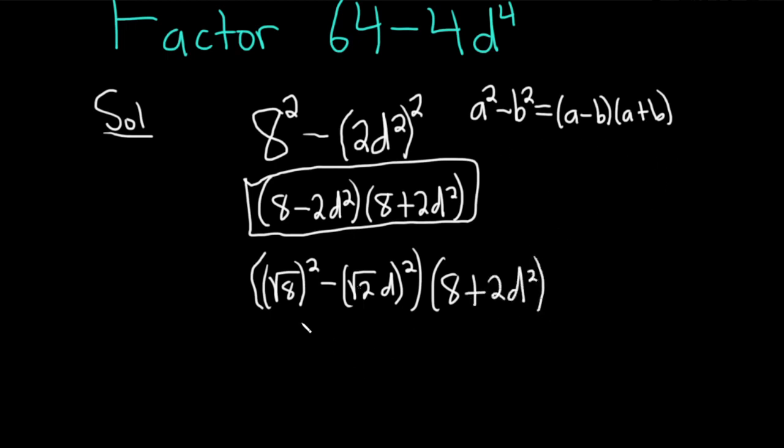And we apply the difference of squares formula again. So, this would be the square root of 8 minus the square root of 2d. And then here we have the square root of 8 plus the square root of 2d. And then here we have 8 plus 2d squared.